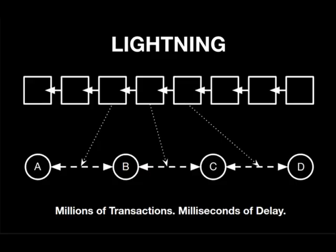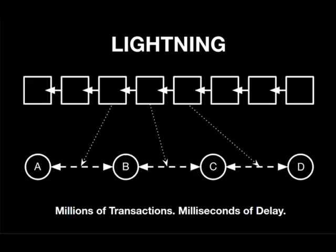With Bitcoin SegWit, sometimes you'll have a thousand transactions closed off the blockchain but recorded by only one entry in the blockchain. With Bitcoin Cash, for every open-ended lightning channel that closes, there is one transaction recorded on the blockchain. With Bitcoin SegWit, you can close a thousand channels on the Lightning Network and only record it once as one block entry. That's why Bitcoin SegWit is a fractionally reserved blockchain.